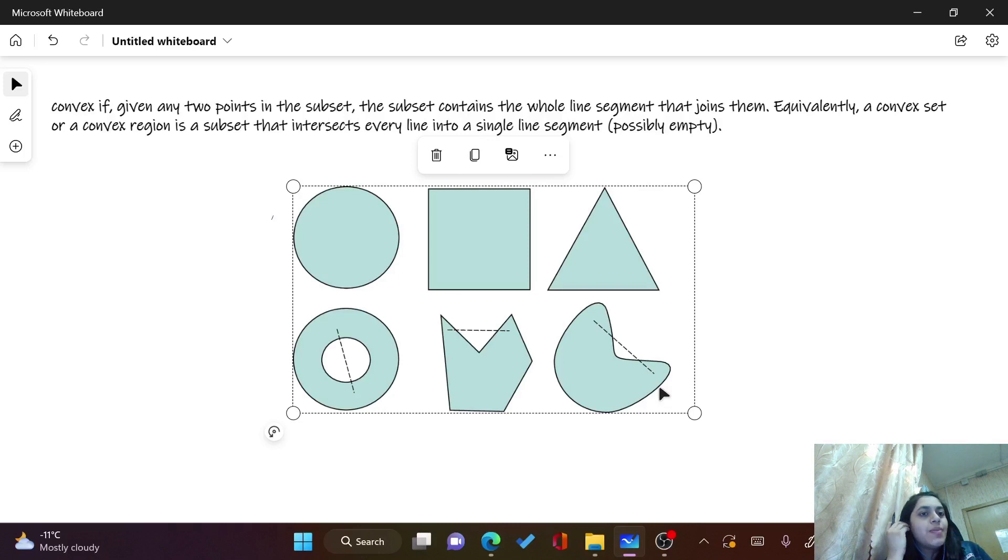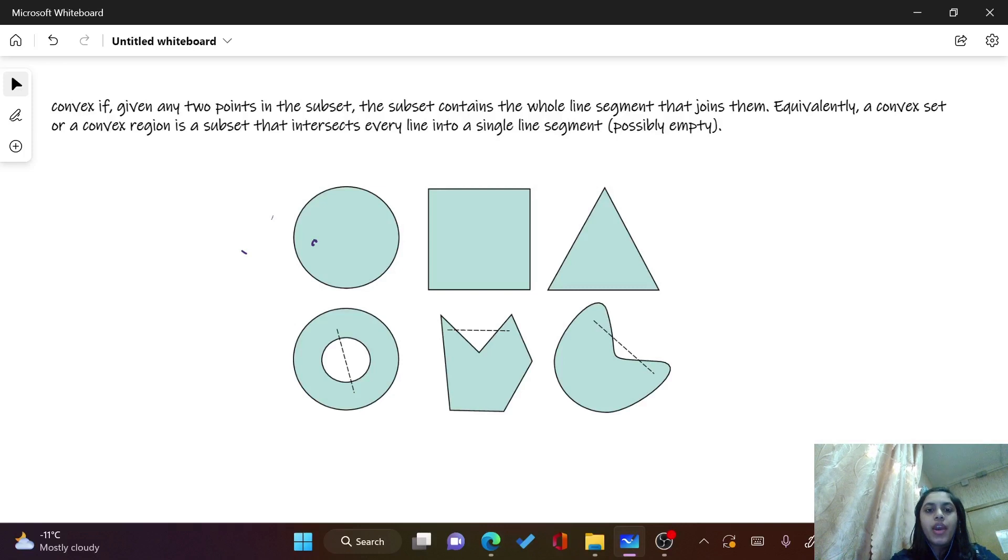So convex set is basically such a set from where if you choose any two points from the subset and if you draw a line, the line should be in the set itself. It shouldn't be out of the set. So as you can see in the example, if you draw any two points and if you draw a line segment, it is not outside the graph.